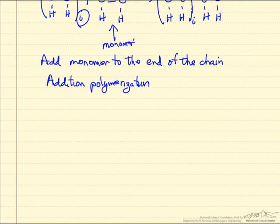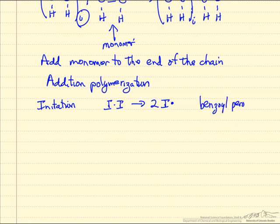So there are several steps involved. We have to get this started. We have to initiate the reaction. Normally we use some molecule that's not the monomer that can split apart to form radicals, and there's a species that can do this. Peroxide is one.